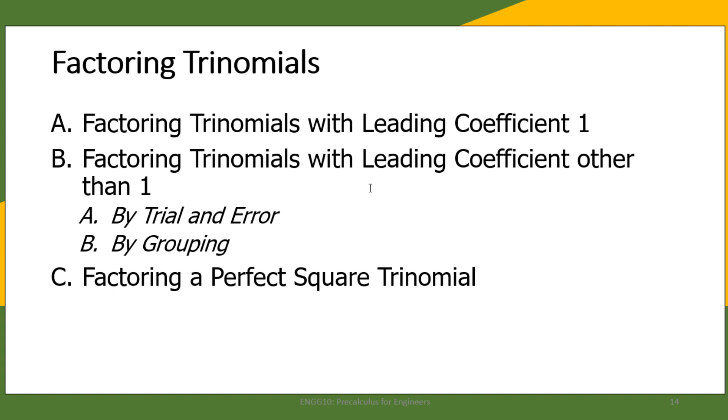There are three different scenarios where we can do that. For the first one, we are going to factor quadratic trinomials with leading coefficient of one. Second, we are going to talk about factoring trinomials with leading coefficient other than one. We'll do that in two ways: by trial and error and by grouping. And then on the third one, we are going to factor perfect square trinomials.